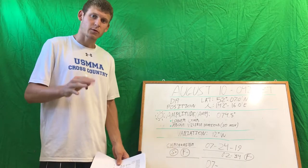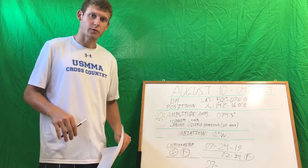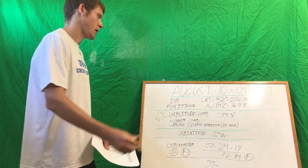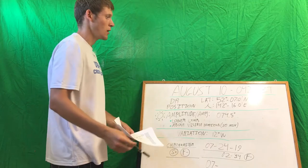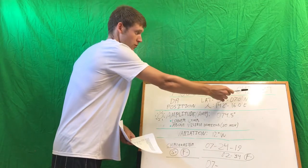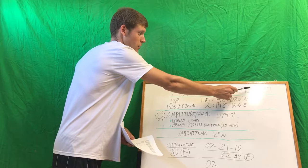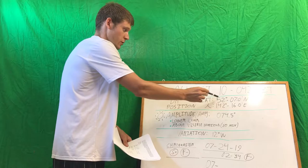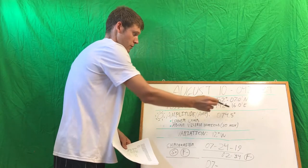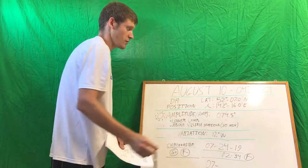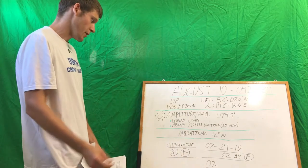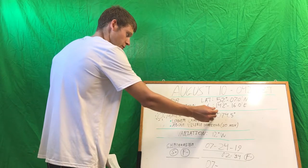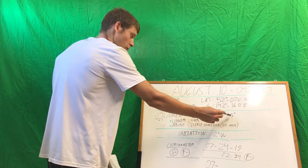For an amplitude question, the first thing you want to do, just like any other question, is organize all the knowns. In the question we have: our date was August 10th, our zone time was 0426, they gave us our position — latitude 52 degrees 7 minutes north, longitude 142 degrees 16 minutes east — and the sun amplitude was observed at 074.5 degrees.